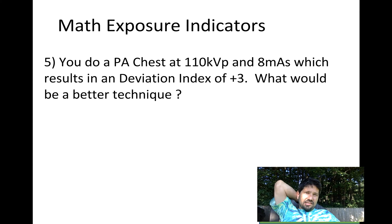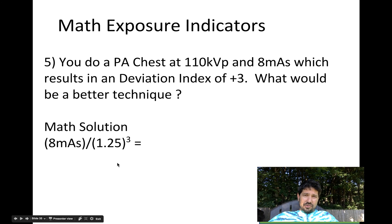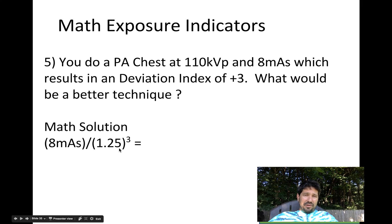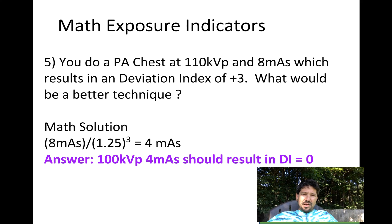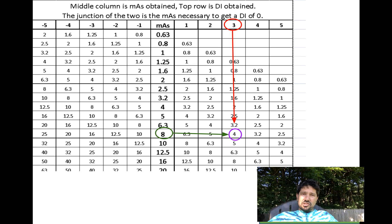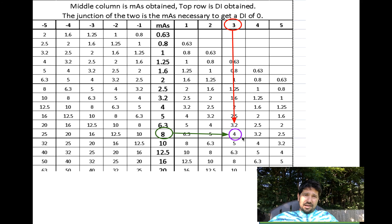So the answer is 100 kVp at 6.3 mAs should have resulted in a DI of 0. Here's another one: PHS at 110 kVp and 8 mAs gives a DI of 3 — what's better? DI of 3 is positive, so it's overexposed. You could do the math: divide by 1.25 raised to the third, which gives 4 mAs. Or just go to the chart with DI of 3 and mAs of 8, find the intersection, and the answer is 4 mAs — what you should have shot it at to get a DI of 0.